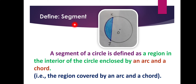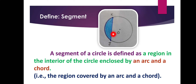Segment. A segment is like a sector — it is also a region in the interior of a circle — but it is enclosed by an arc and a chord. In a sector, the region was covered by an arc and two radii, but here the region is enclosed by an arc and a chord. It is called a segment of a circle. Here the segment is JK. The segment is the region covered by an arc and a chord.